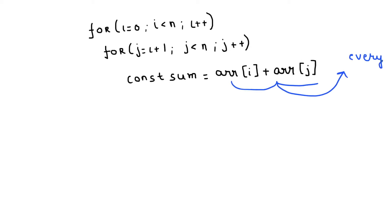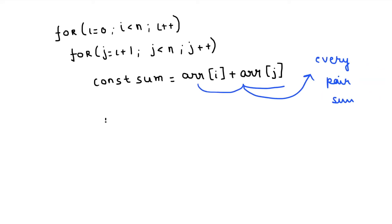We will use two for loops to find all pairs and do a summation. The outer for loop initializes with i equal to zero, and for the inner for loop we initialize j with i plus one. We'll take another variable sum and calculate the sum of the pairs array of i plus array of j. Now we check whether that sum already exists in the hash map or not. If yes, we can return true. If no, we insert that sum into the hash map.